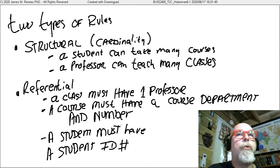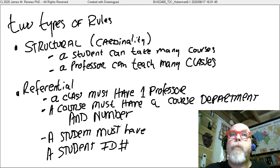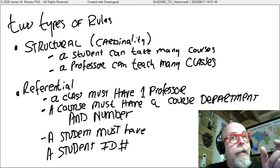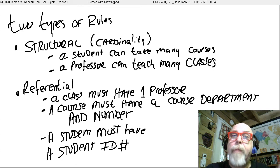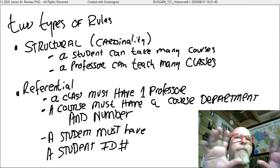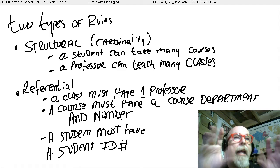But a referential rule would be something like a class must have one professor. Because if a class doesn't have a professor, it's not really a class, is it? Or a course must have a course department and course number. Like this course, BUIS 2400. That makes sense. You can't have a course without the letters. And you can't have a course without the numbers. You've got to have both. Think of this. A student must have a student ID number.